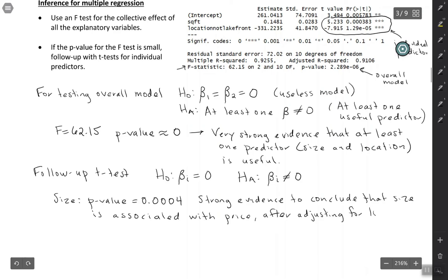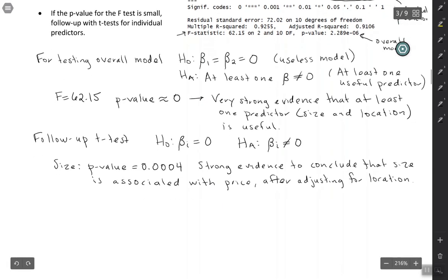Adjusting for another variable, we already saw how that can change the coefficient. And of course, if it changes the coefficient, it can change the p-value too. They have different meanings. So it could be significant in simple regression and not significant in multiple regression or vice-versa.